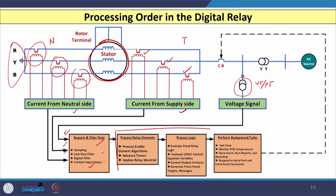After that, the second and third blocks relate to the algorithm part. The relay converts the sampled instantaneous values into phasor values — depending on the sampling frequency and number of samples taken per cycle. These phasor values are used for decision making. The logics are implemented here, computation is carried out, and then outputs are given by the relay in the form of output contacts, front panel targets, or messages so the operator can take appropriate action.